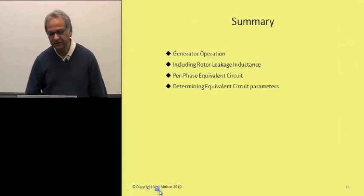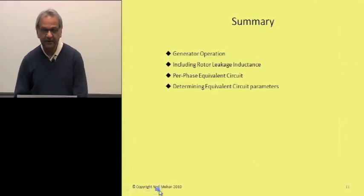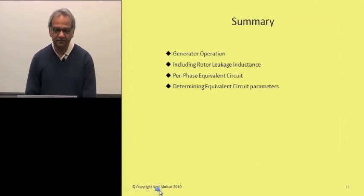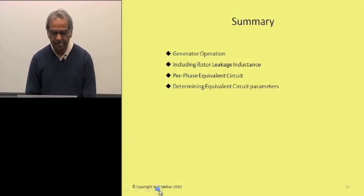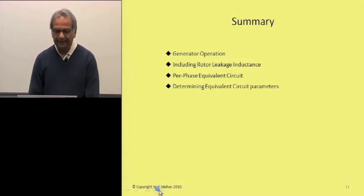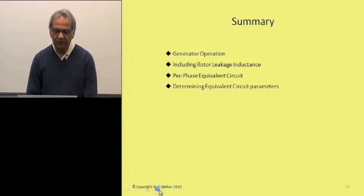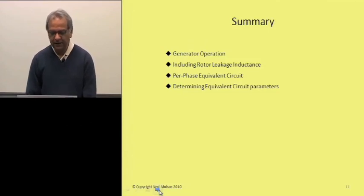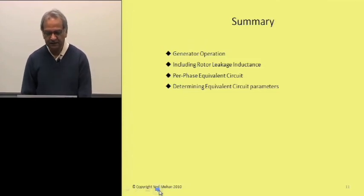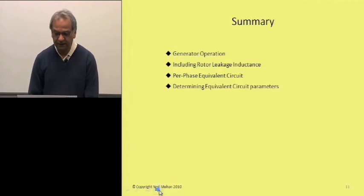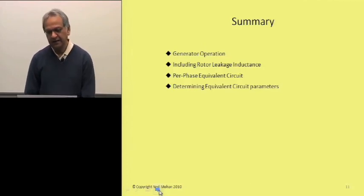This brings us to the summary. We have seen how an induction machine can operate as a generator, and what the effect of including rotor leakage inductances would be. We have seen the per-phase equivalent circuit, how to derive it, and how to obtain the circuit parameters.